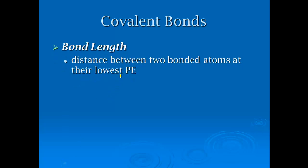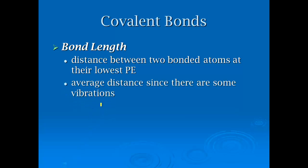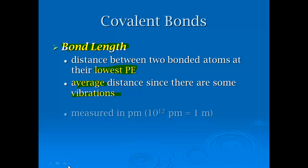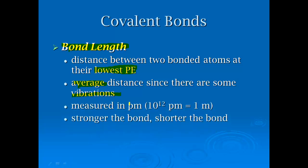Bond length is the distance between two bonded atoms at their lowest potential energy. It's an average distance since even in solid form there are still some vibrations of molecules — they're not totally still. Bond length is measured in picometers, and the stronger the bond, the shorter the bond — you need to know this relationship.